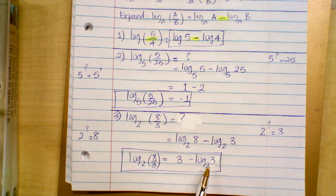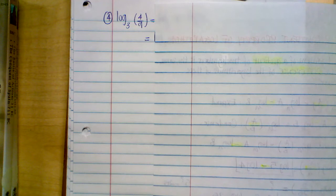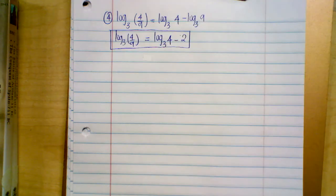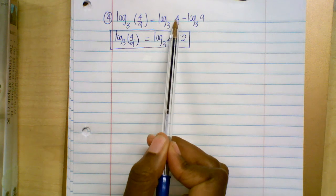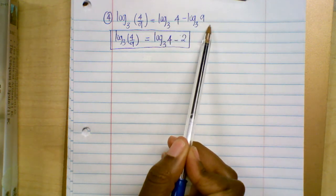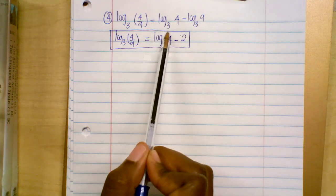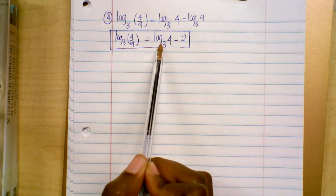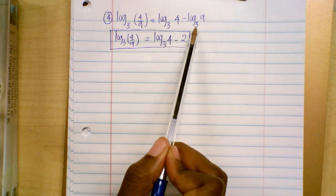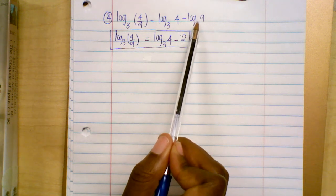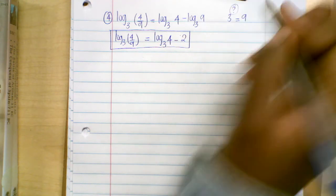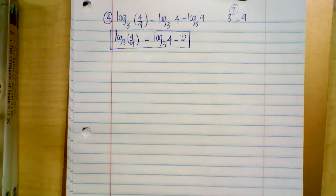Let's do one more expand example, then move on to condensed form. Expand log base three of (four over nine). Here we have a division, so it becomes the log of the numerator minus the log of the denominator: log base three of four minus log base three of nine. Log base three of nine means what exponent gives base three an answer of nine? Three squared is nine, so the exponent is two.